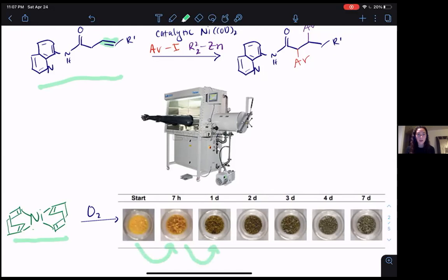For that reason, we store all of our nickel cod in our glove box, which looks like this. This glove box has no oxygen in the atmosphere, so any compounds that are sensitive to oxygen can be stored there indefinitely. But as soon as you take them out, they go bad and you've wasted your catalyst.